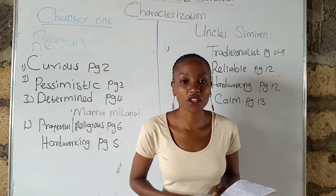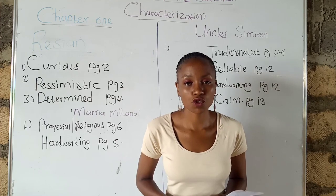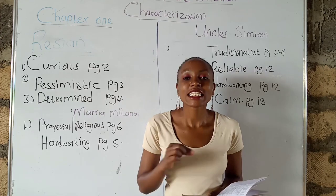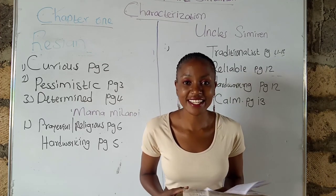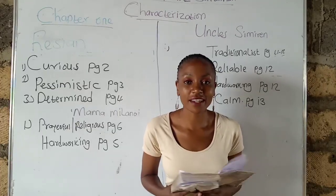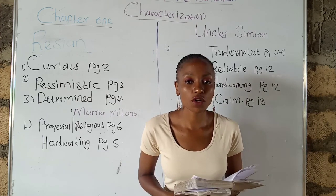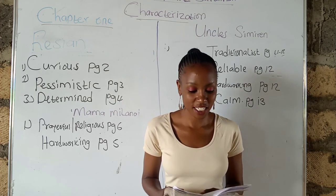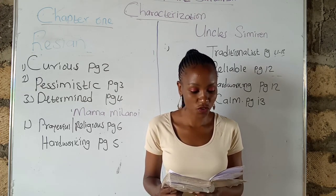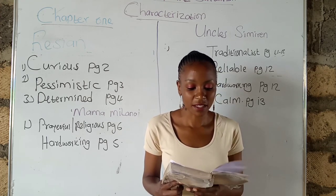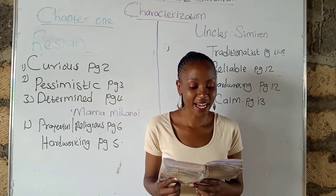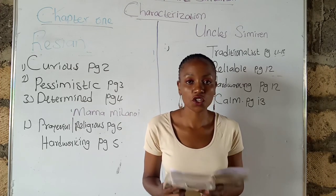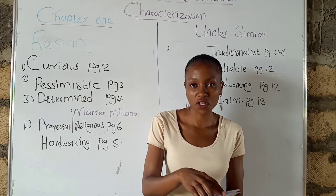She is determined to join the Egyptian University — she does not want to work at their father's shop. She wants to go to the Egyptian University, take a course in veterinary science, and become a veterinary doctor. She also asks Tayo to persuade their father to allow them to go to the Egyptian University. Page four: 'I don't want to work at father's shop,' Resian declared, her pretty face hardening. 'I want to come back to Nakuru and join the Egyptian University.'